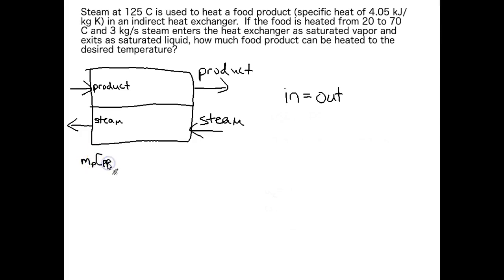So that is going to be the mass for the product multiplied by the Cp of the product multiplied by the temperature of the product coming in minus our reference temperature. So that looks just like the energy balances we've seen so far.